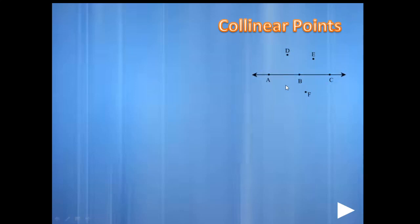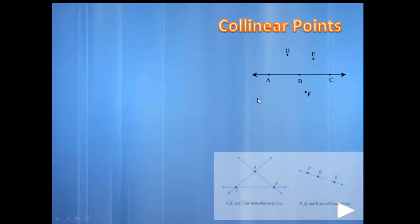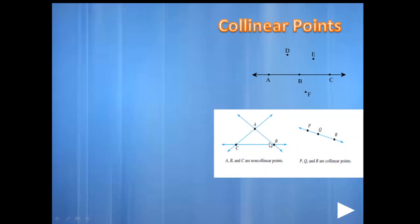Let us learn what collinear points are. The diagram shows many points, with three points lying in a line. If there are three or more points and a line can pass through all of them, then those three or more points are called collinear points. It should be a minimum of three or more points lying on a single line to be called collinear points.